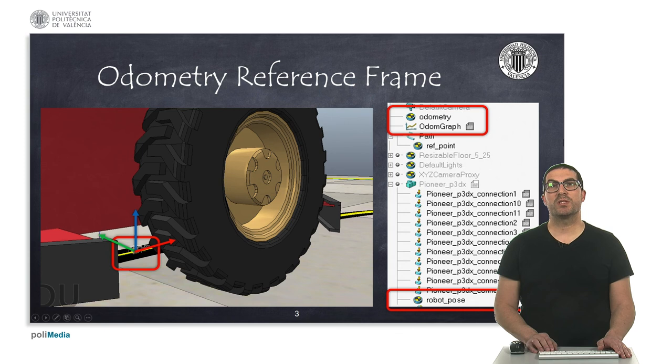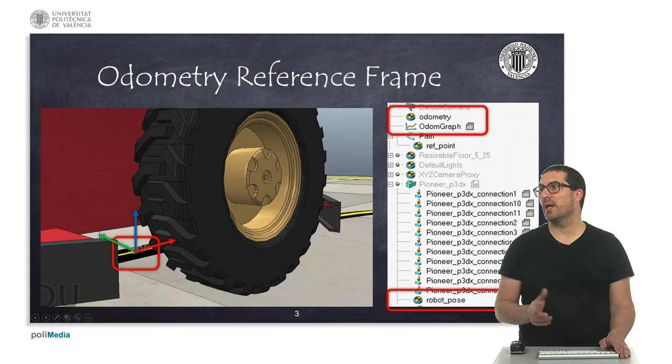So to create an odometry system, we will need to create a dummy and place it at the base of the robot, just aligned to the wheel axis and in the center. You can rename this dummy as odometry and this will actually have the same position and orientation as the dummy we used for a previous video in which we get the ground truth position of the robot.